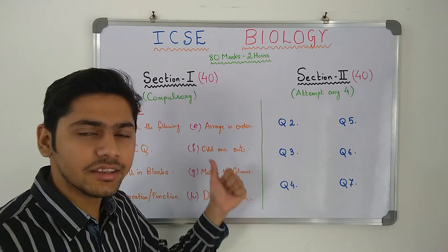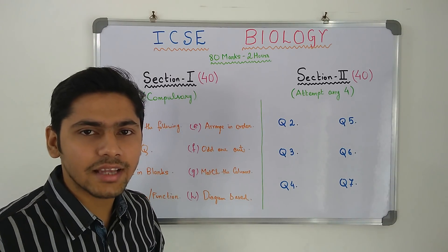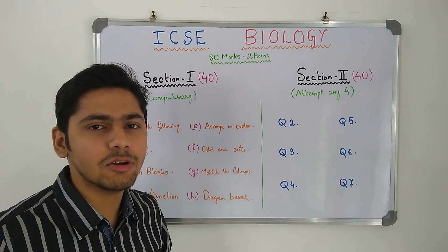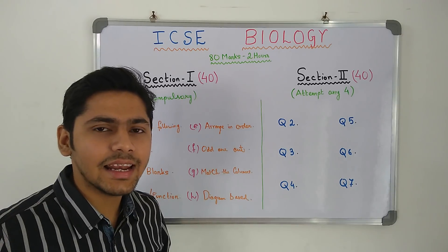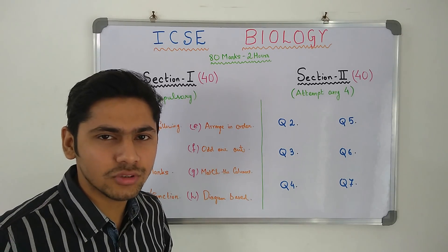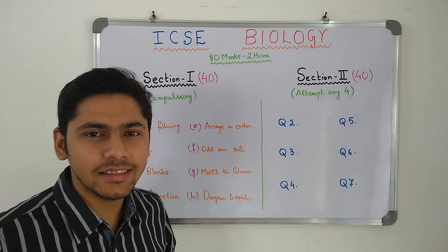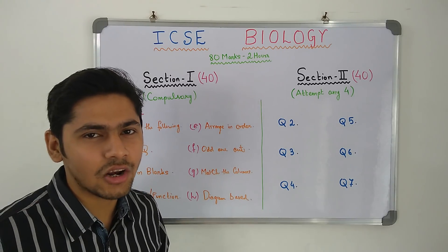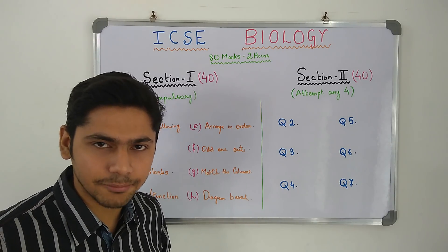I figured these out from the new specimen paper for ICSC 2019 biology. The link will be in the description box below. But ICSC can ask something outside of this — for example, explain the terms, short question answer, and so on. But all the questions are objective based.